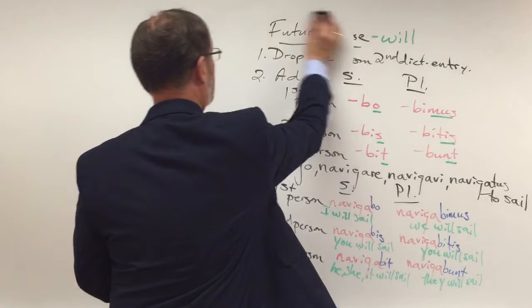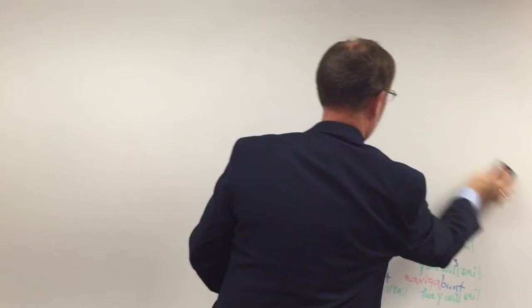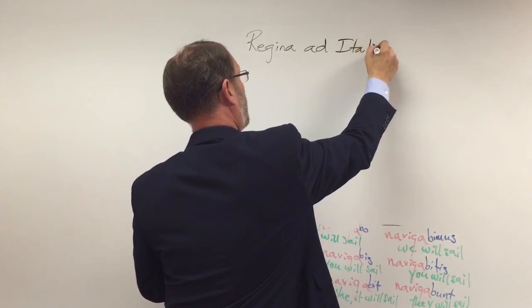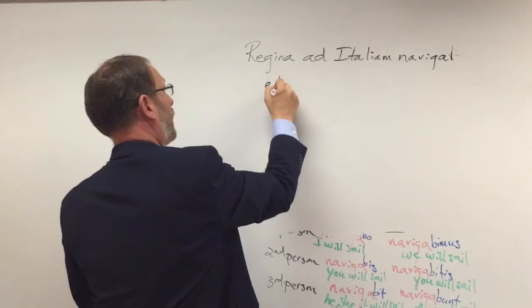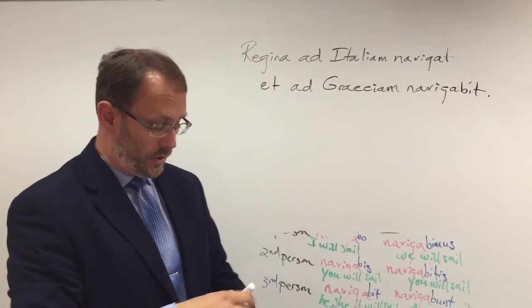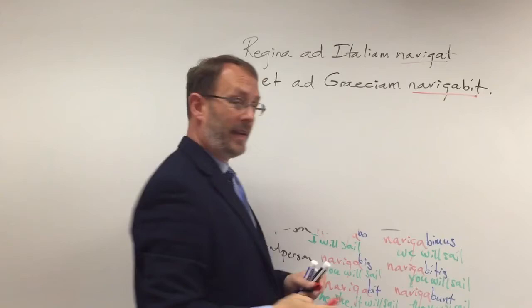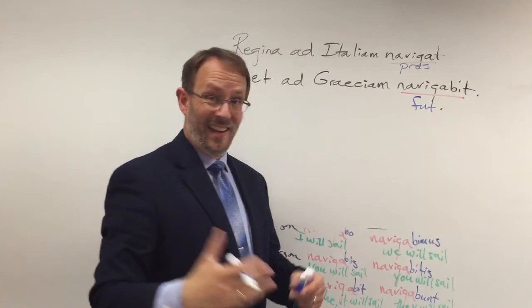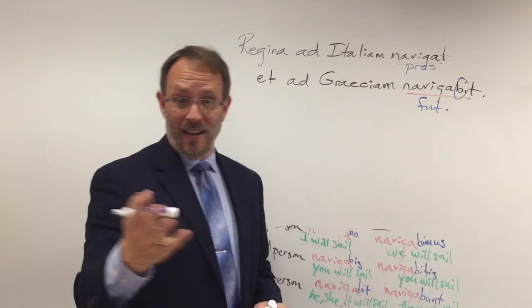What if we had something like this: 'Regina ad Italiam navigat, et ad Graeciam navigabit.' We want to see what our verbs are — first thing we do is underline our verbs. There's 'navigat' and 'navigabit.' What's the tense? Well, we only know two tenses, so it's pretty easy right now. Navigat is present tense; navigabit is future. How do you recognize the future? It's got a big B in there — that's future tense. And if it doesn't, it's present. That'll last us for a little while.